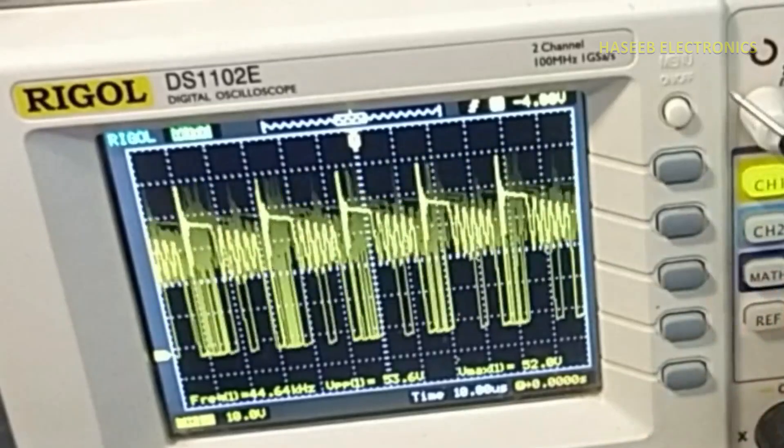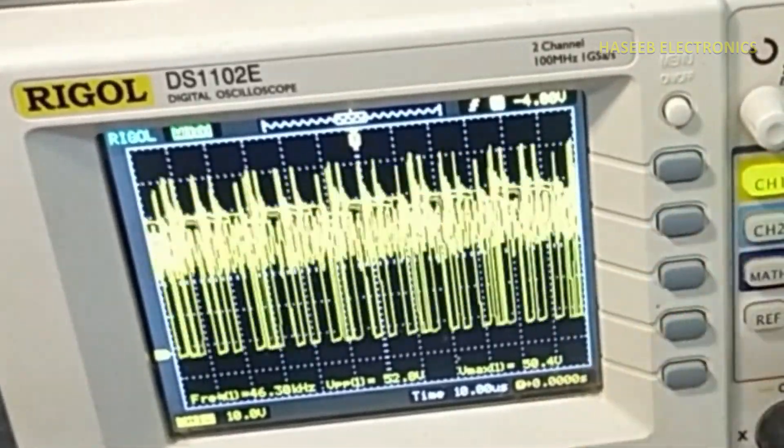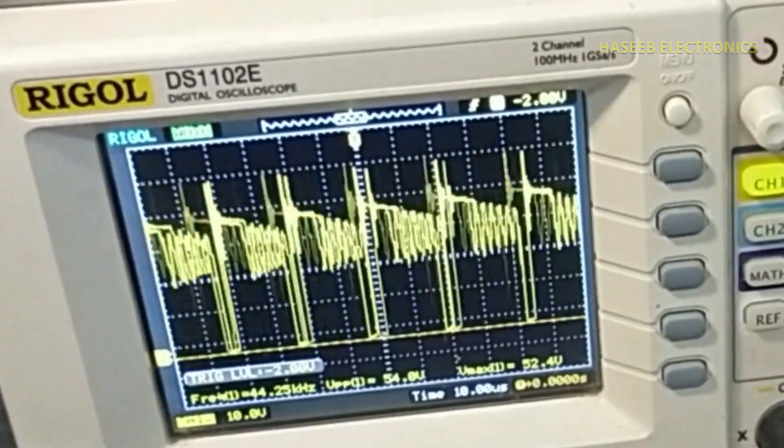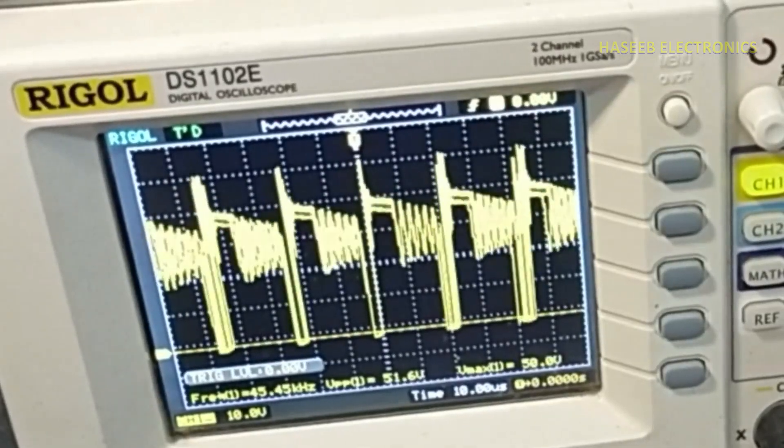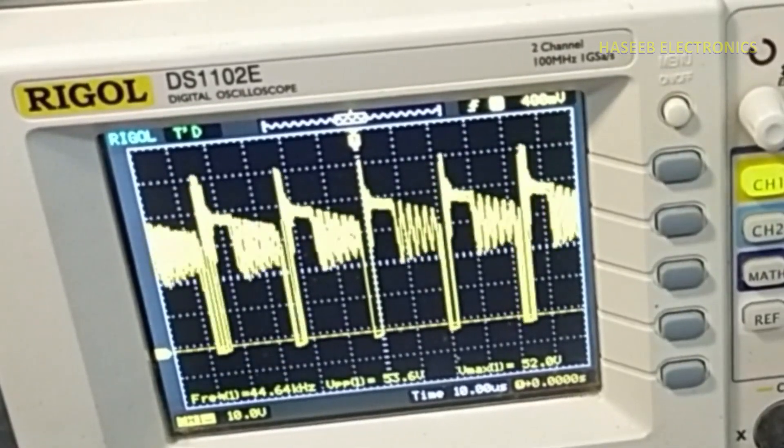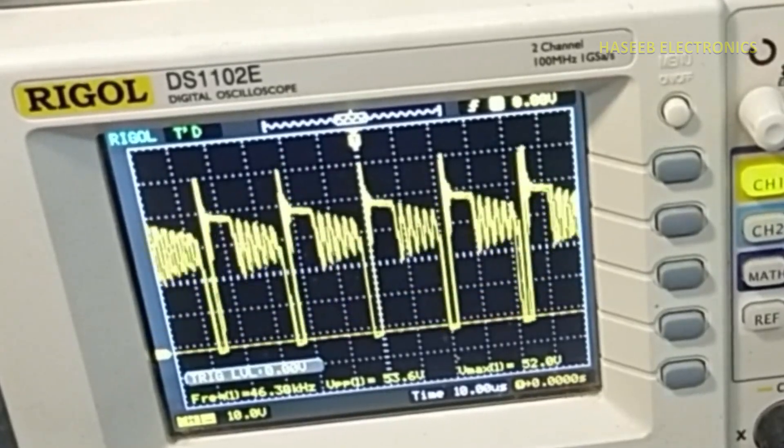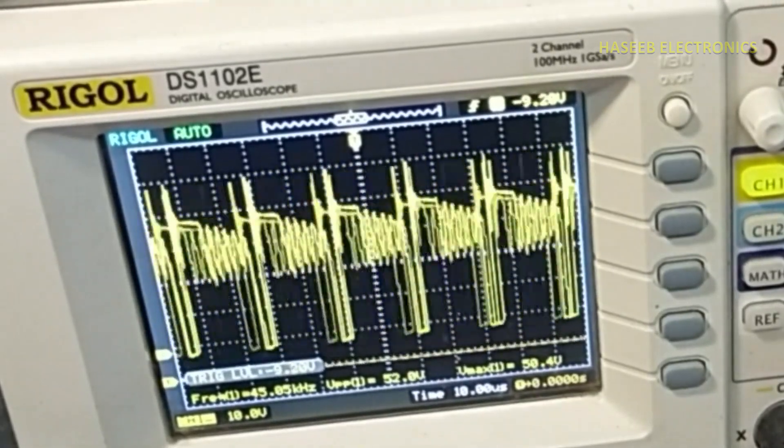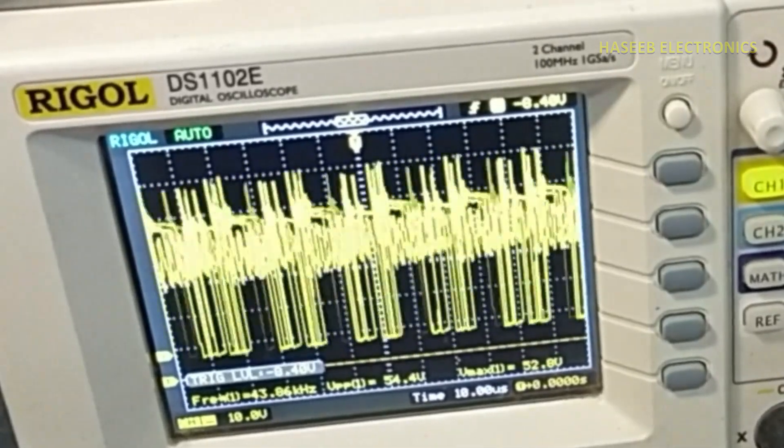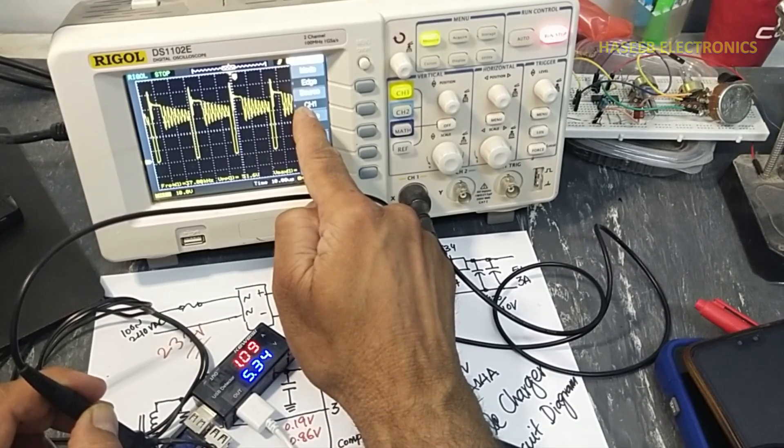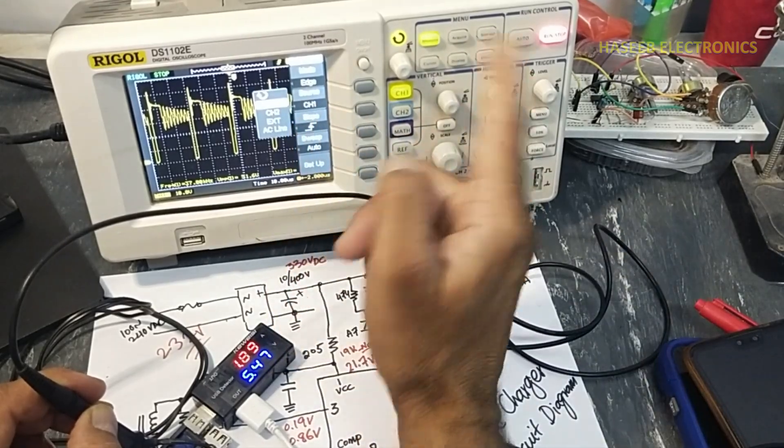When voltage level at channel number one will increase 1.6 volt, at that time it will start to trigger. If I set to minus 4 volt, it cannot trigger. Why? Because it cannot find minus 4 volt, because our signal is reaching from 0 volt to upside. When it is reaching 400 millivolt, it start to display a valid signal, but if the trigger level is in minus, it will not display signal.